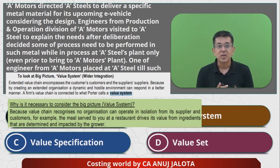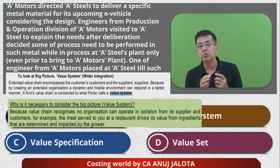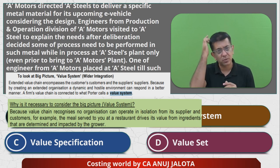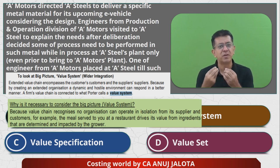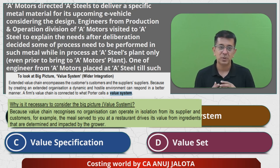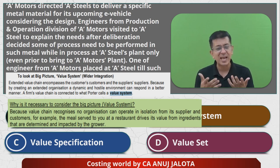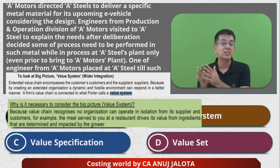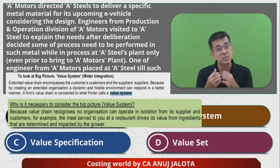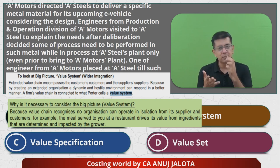A value chain recognizes that no organization can operate in isolation from its suppliers and customers. For example, a meal served at a restaurant derives its value from the ingredients that are determined and impacted by the grower. Similarly, whenever I am not well, I drink Tulsi water. Tulsi can be grown in various ways — one way is with no pesticides, which is organic Tulsi that has very high medicinal value compared to where fertilizers are used. I purchase that Tulsi from a supplier in Gujarat, and we boil it up — that helps a lot.